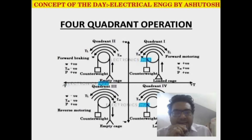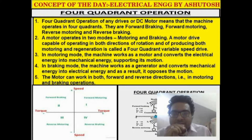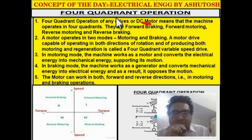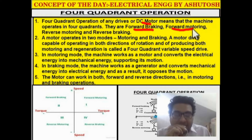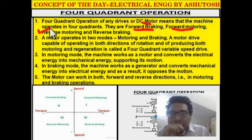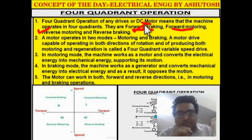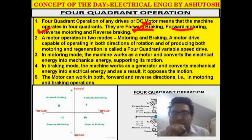The four quadrant operation of any electrical drive — DC motor or induction motor — means that the machine operates in four quadrants: forward motoring, forward braking, reverse motoring, and reverse braking. These are the four quadrant operations, or four modes of operation, of any electrical motor.